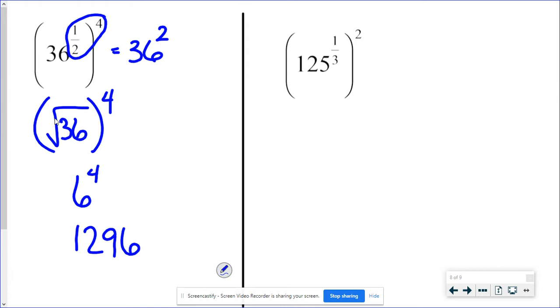In this last problem, the cube root of one-twenty-five to the one-third power would be the cube root of one-twenty-five. This one, I would not recommend multiplying those exponents, because one-third times two is going to be two-thirds. We don't have a nice, easy way to get that answer. So let's do this one in parts, just like we did in the last one. The cube root of one-twenty-five squared. Cube root of one-twenty-five, we've done a couple of times already, that's five. Five squared is twenty-five for my answer.